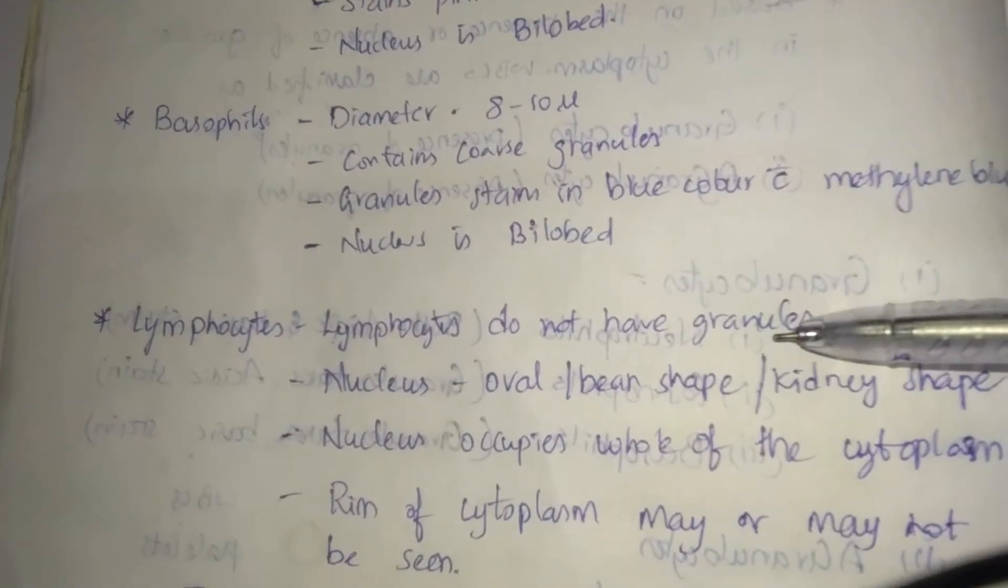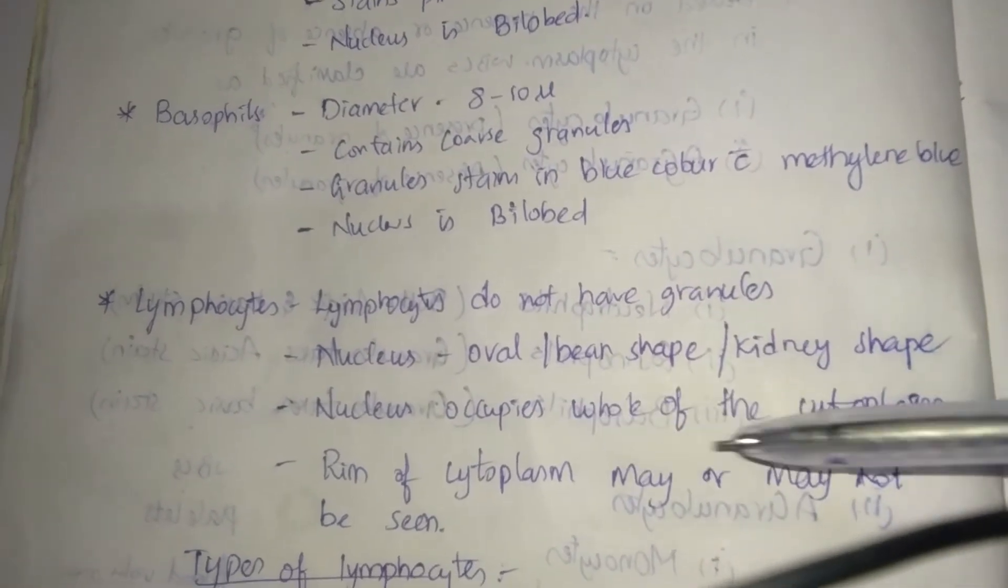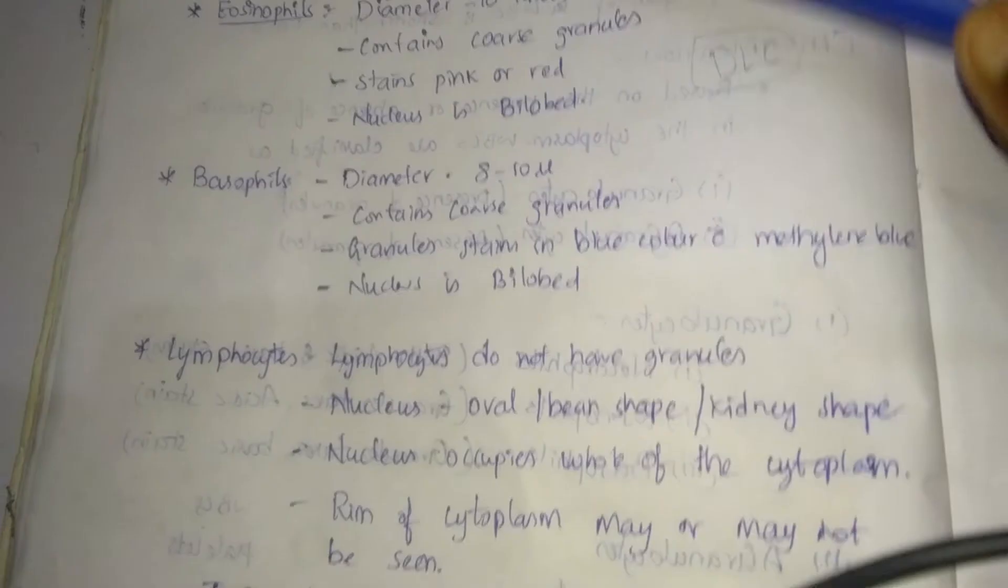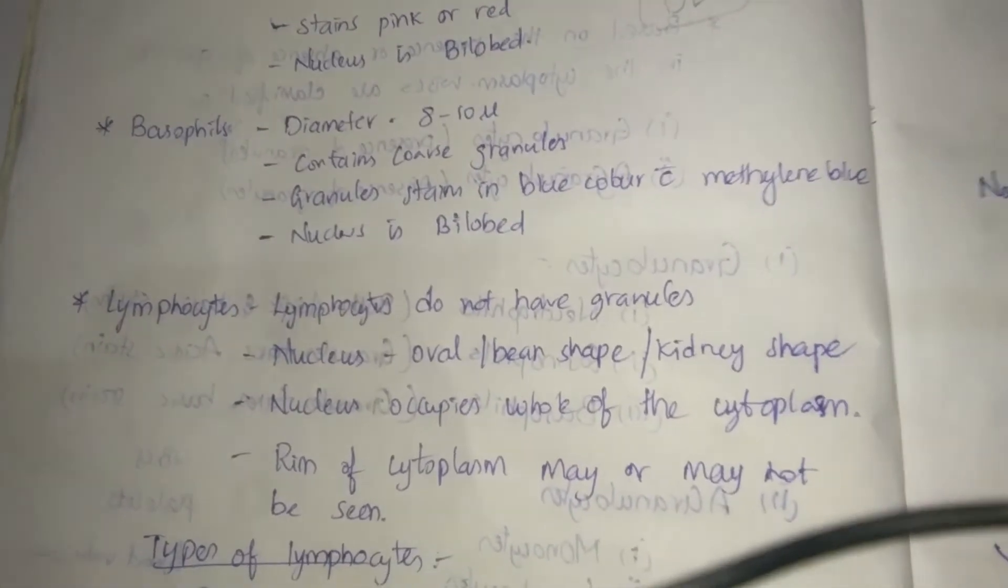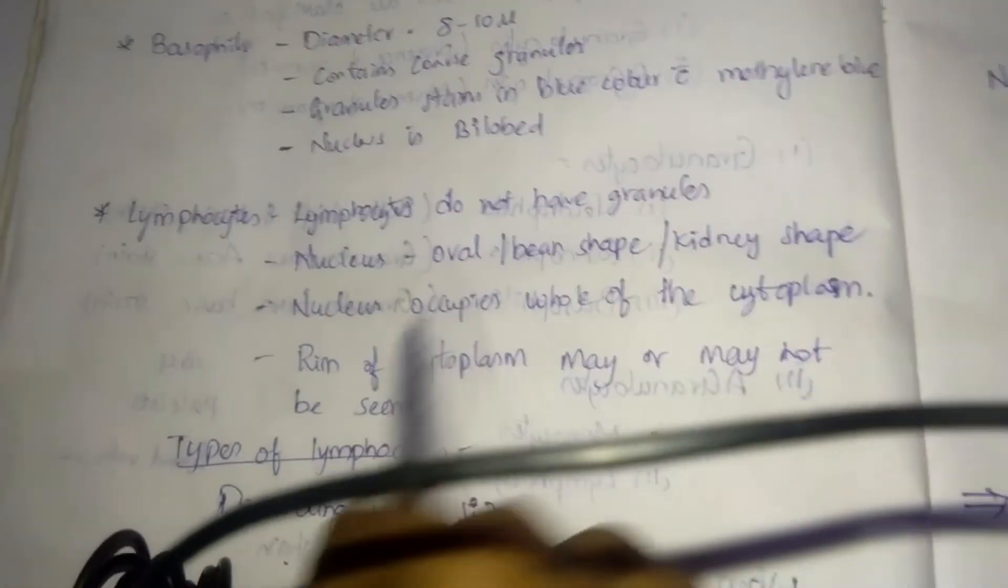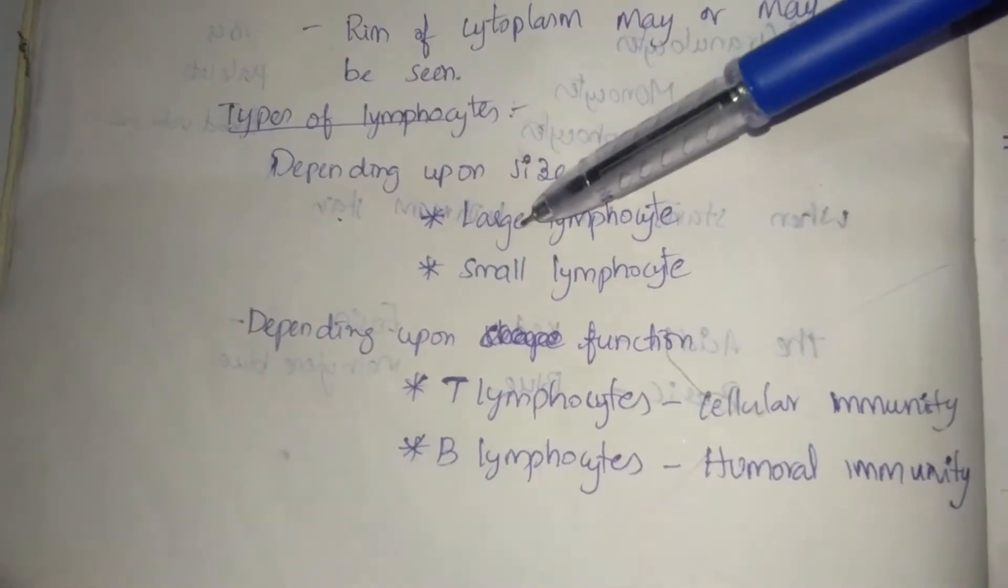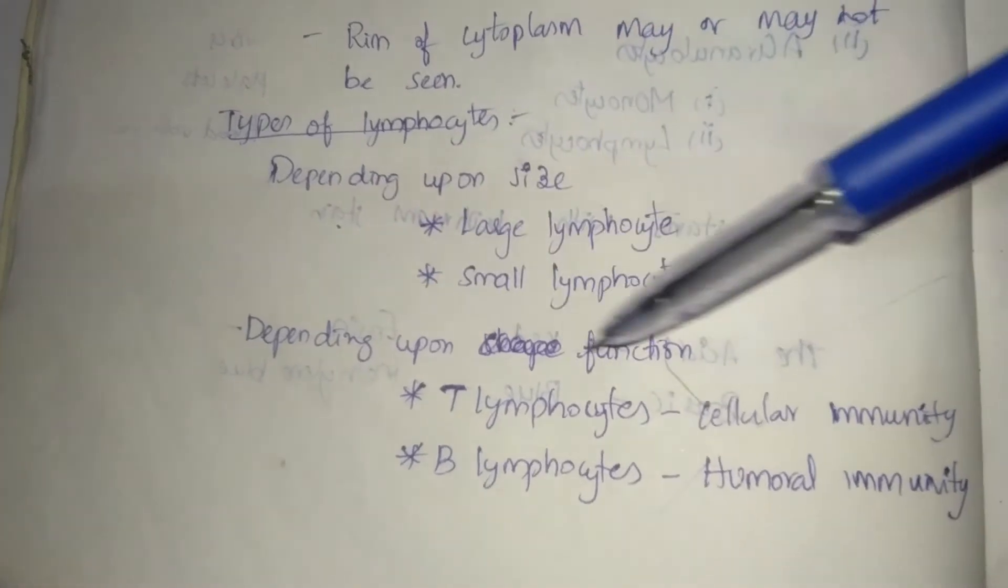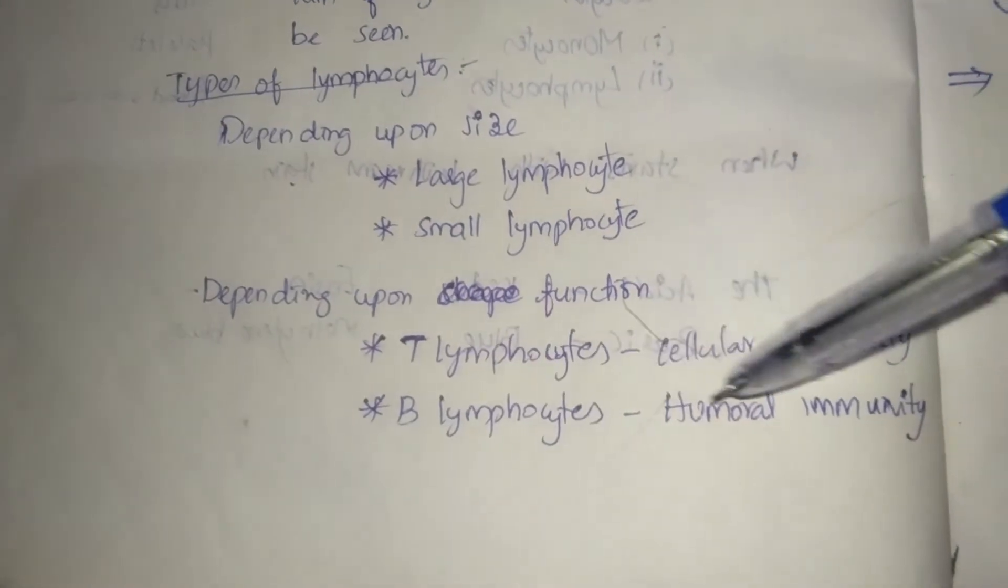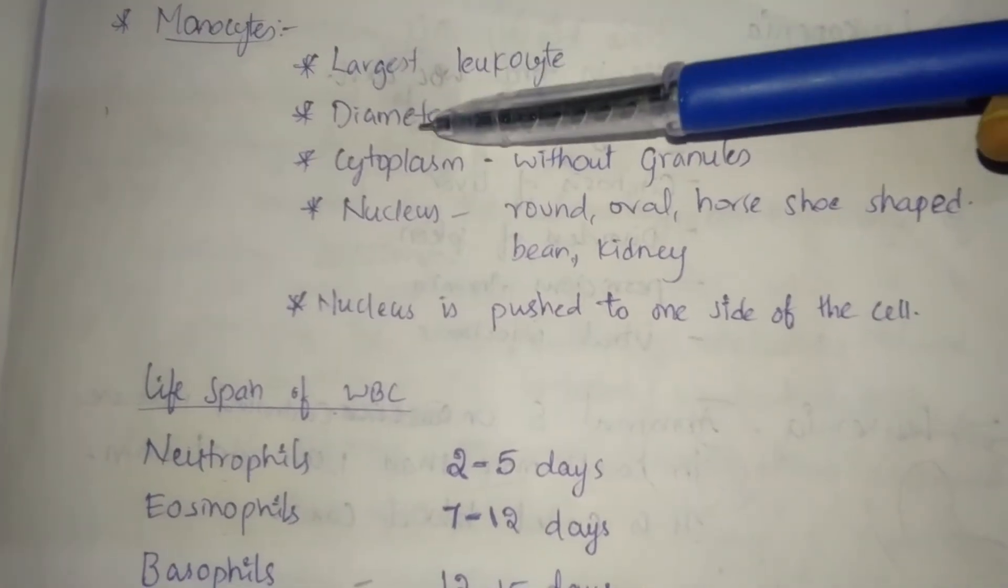Lymphocytes: Lymphocytes do not have granules. Nucleus is oval or bean shape or kidney shape. Nucleus occupies whole of the cytoplasm. Rim of the cytoplasm may or may not be seen.